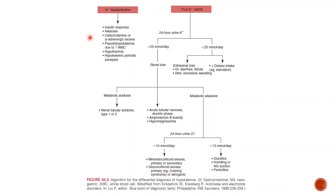Catecholamines or beta-adrenergic excess stimulate beta receptors, causing movement of potassium intracellularly via increased sodium-potassium ATPase activity. Pseudo-hypokalemia can occur due to increased WBC count — the WBCs take up potassium from the sample, especially when serum is not separated soon after collection. Hypothermia also causes hypokalemia through increased sodium-potassium ATPase activity and beta receptor stimulation.